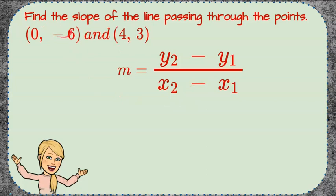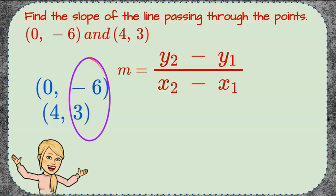These points could be point 1 or point 2. It doesn't matter which is which. So let's begin by writing our ordered pair zero, negative 6, and 4, 3. Identifying that our numerator of our ratio is going to be the y coordinates, negative 6 and 3, and the denominator is going to be our x coordinates of 0 and 4.